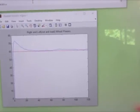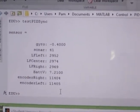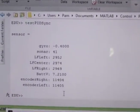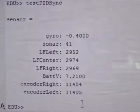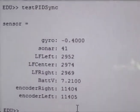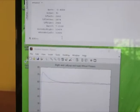And if you look at the final numbers after the whole length of time, we've got 11,404, 11,405 for the encoder. So that's excellent tracking.